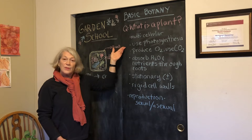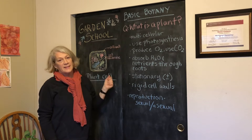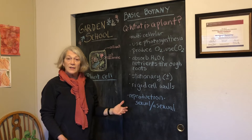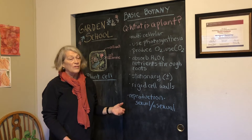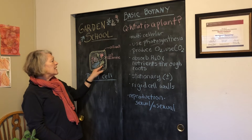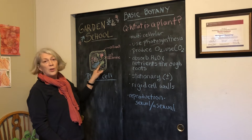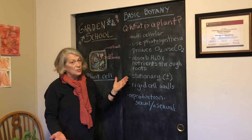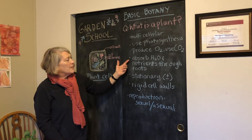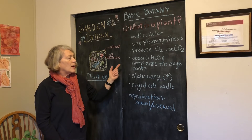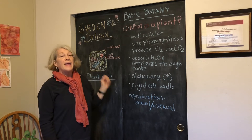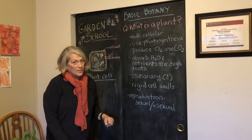Plants also use photosynthesis to generate their food from the Sun using the pigment chlorophyll. They do that in an organelle within the cell called a chloroplast, and animals do not have that. They produce oxygen and they use carbon dioxide.